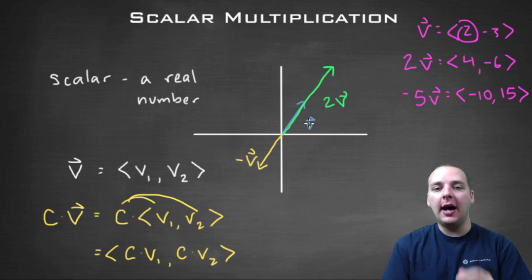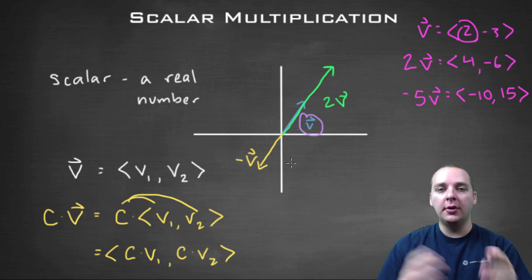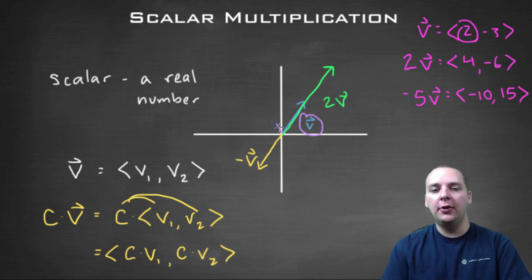One thing a scalar cannot do, though, is a scalar cannot change the direction of v. For this vector here, v, you could pick any scalar on earth, and it would never turn the vector this direction, right?